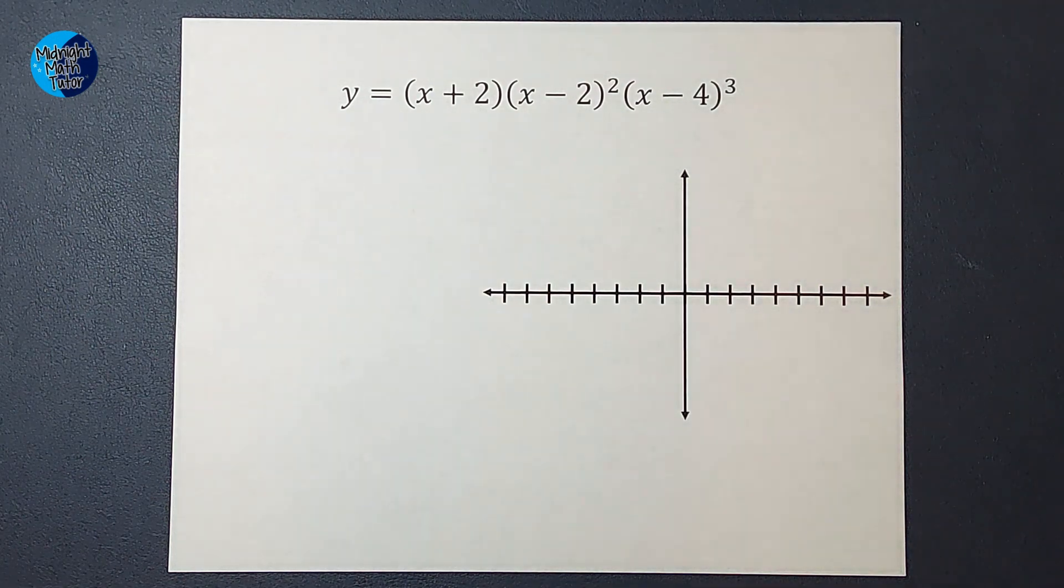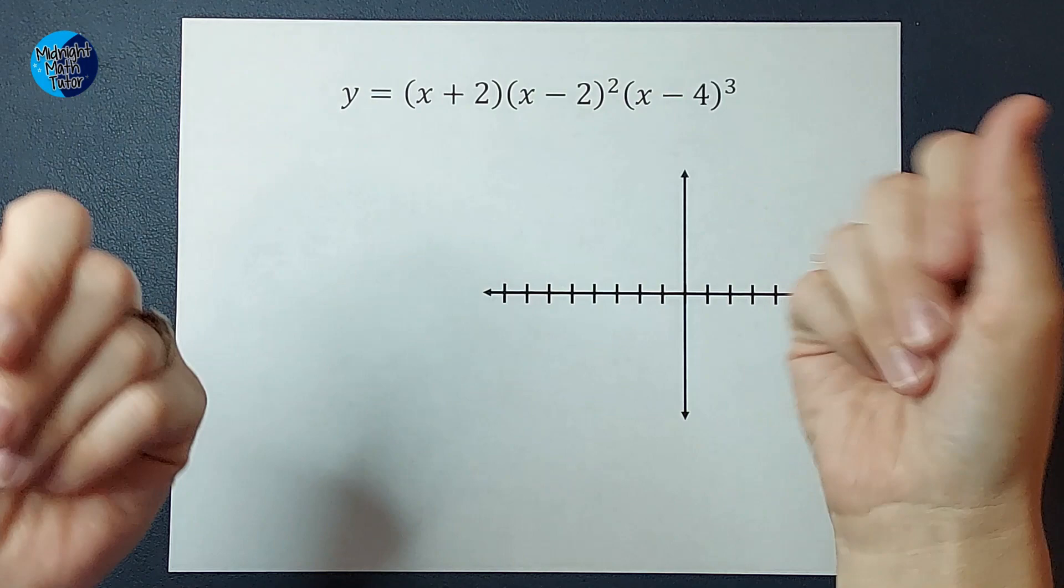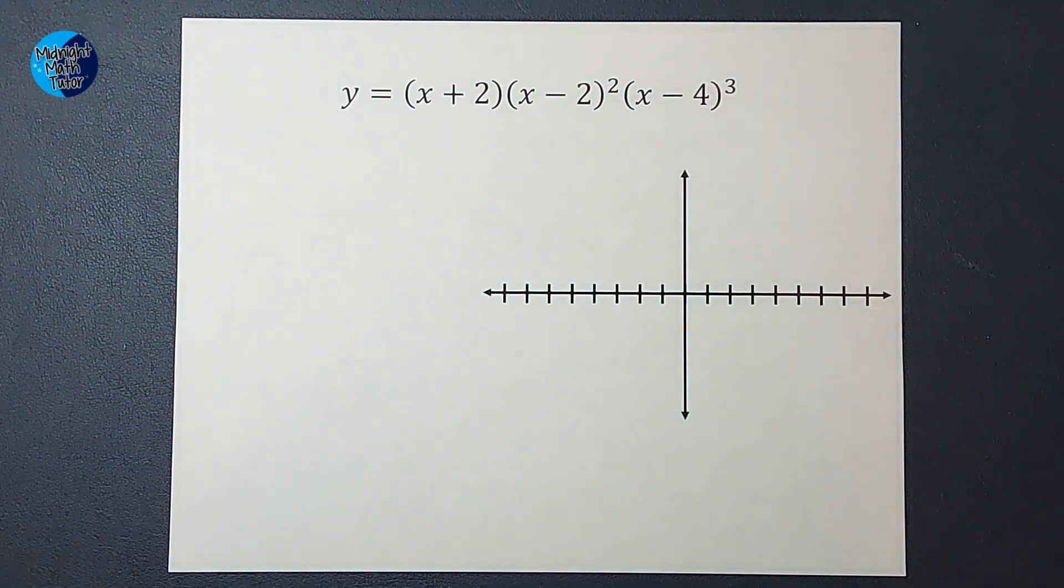Hey guys, we are graphing a polynomial equation today. So whenever we're being asked to graph something, we can always pick a number for x, plug it in, get a y, and graph that ordered pair. But that can be very time-consuming or we don't know what numbers to plug in that give us a good idea of what the graph looks like.